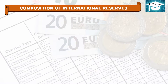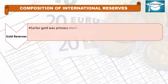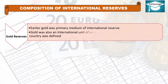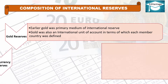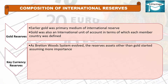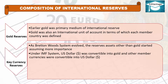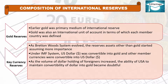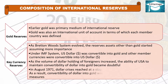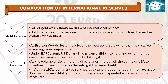Composition of international reserves includes: Gold reserves — earlier gold was the primary medium of international reserve and served as an international unit of account. Key currency reserves — as the Bretton Woods system evolved, reserve assets other than gold gained importance. Under the IMF system, the US dollar was convertible into gold and other member currencies were convertible into US dollars. As dollar holdings of foreigners increased, the ability of the USA to maintain convertibility of the dollar into gold became doubtful. In August 1971, the dollar crisis demanded immediate action, and convertibility of the dollar into gold was suspended.